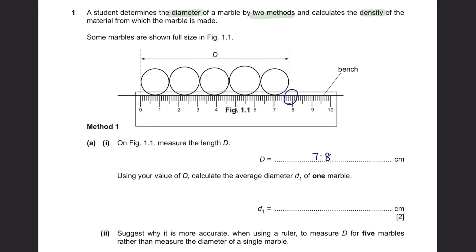Method 1. On figure 1.1, measure the length d. To get the length d, just place your ruler accordingly and you will get a value of 7.8 cm. Next, using your value of d, calculate the average diameter of one marble. To calculate the average, we will take the total length, divide by 5 marbles, giving you 1.56 cm. However, we have written the answers in two significant figures, therefore we are going to use the same method and it will be 1.6 cm.